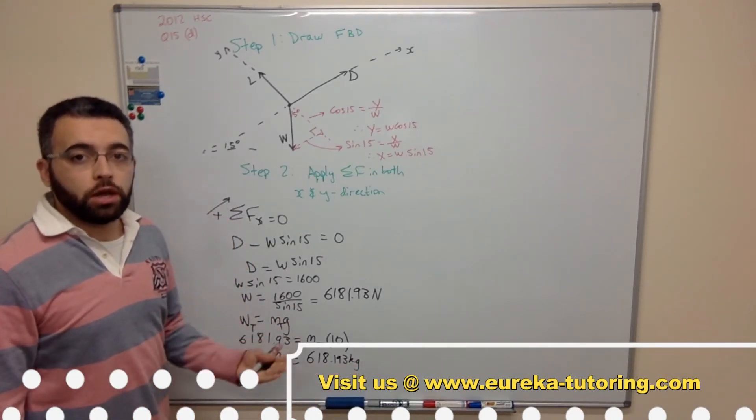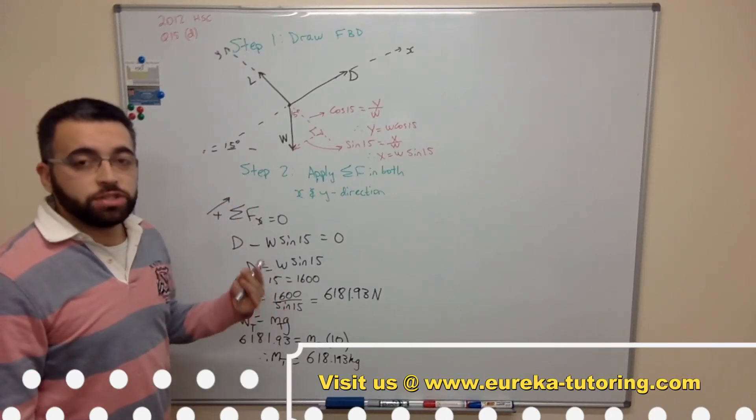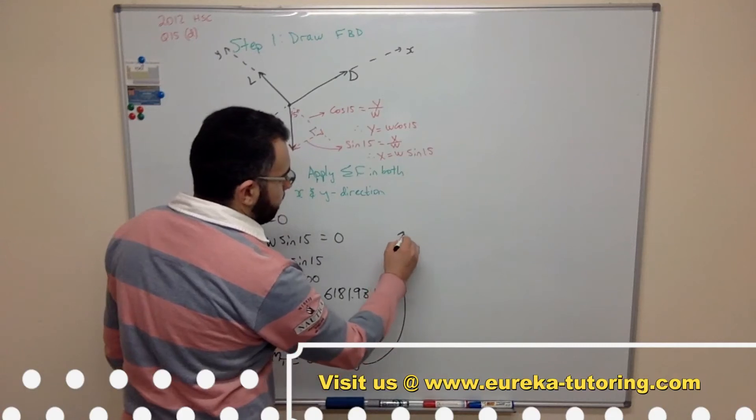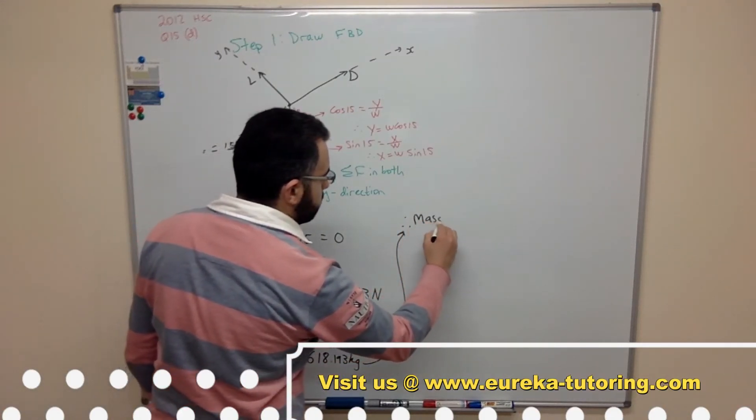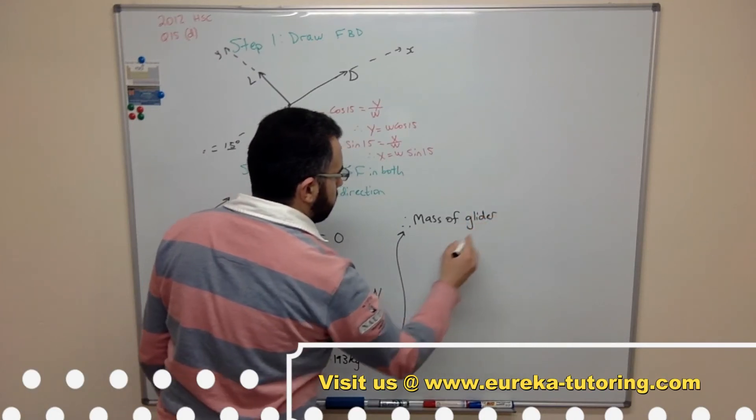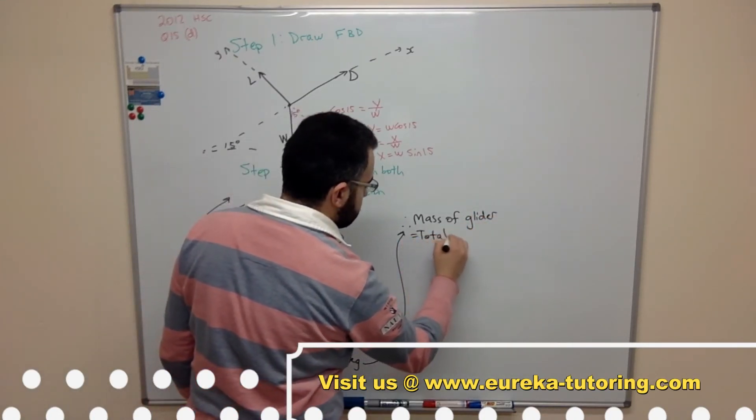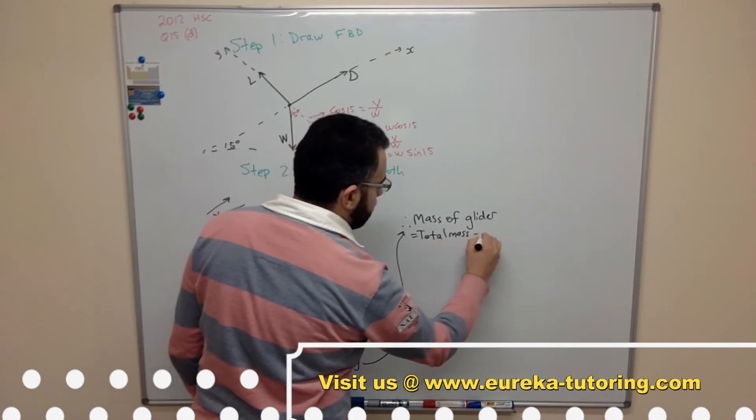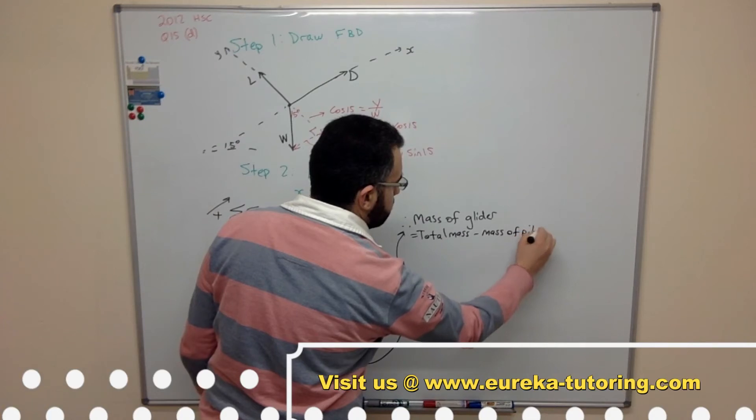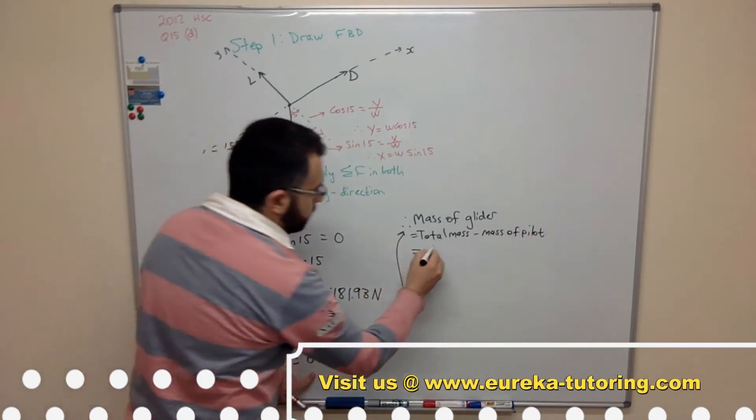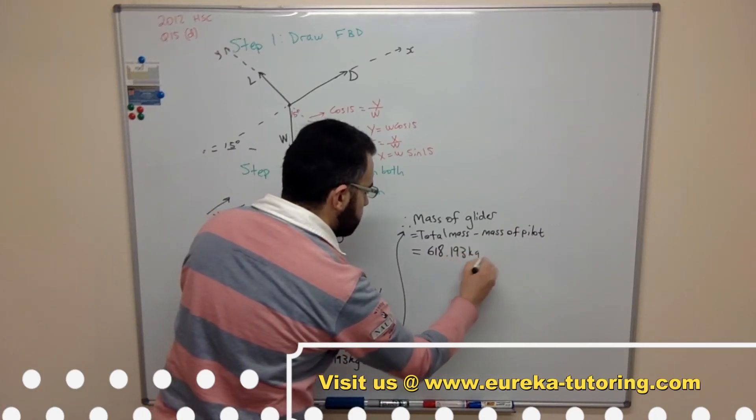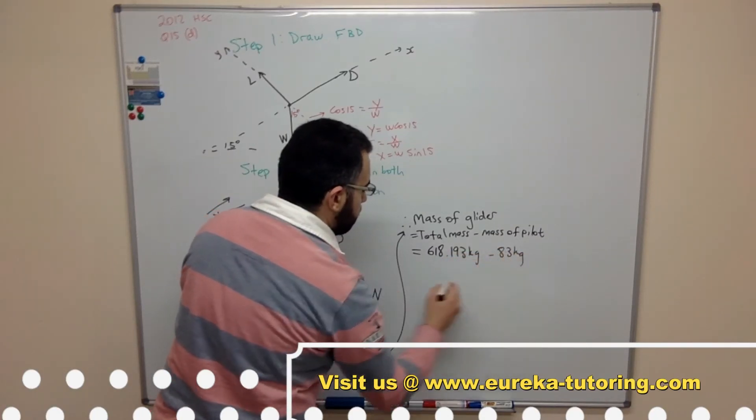Now this is the total mass. However I want the mass of the glider. And we've been given the mass of the pilot which is 83 kilograms. So therefore mass of the glider equals total mass minus mass of the pilot. And that equals 618.193 kilograms minus 83 kilograms.